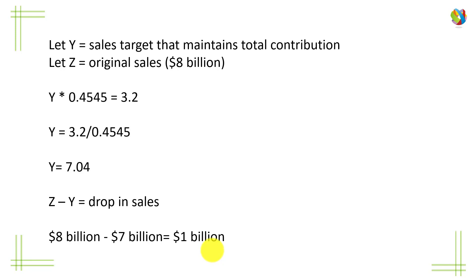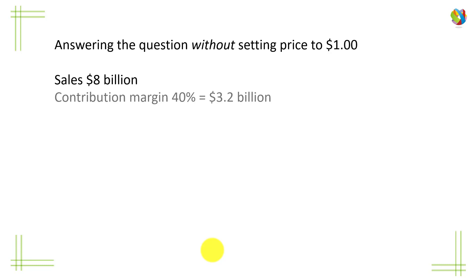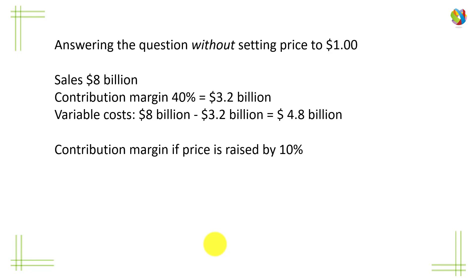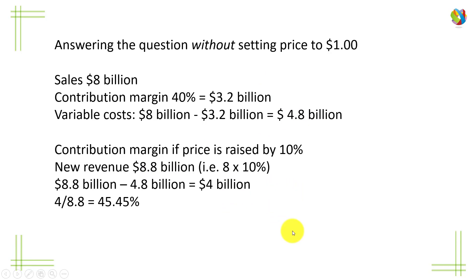Let's look at this another way — the way I actually prefer, without setting the price to 1. Sales are $8 billion. Contribution margin at 40% is $3.2 billion as before. Variable costs will be $8 billion minus $3.2 billion, giving $4.8 billion. Now if price is raised by 10%, we add 10% to $8 billion, giving $8.8 billion. $8.8 billion less $4.8 billion variable costs gives $4 billion total contribution. $4 billion over $8.8 billion equals — surprise surprise — 45.45%.